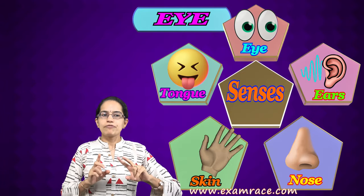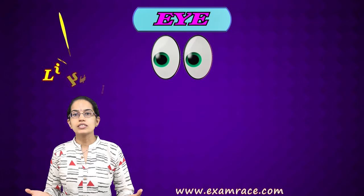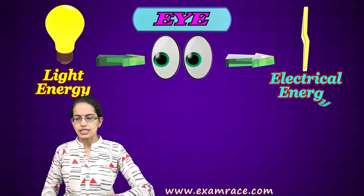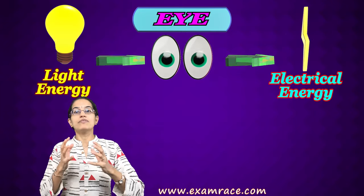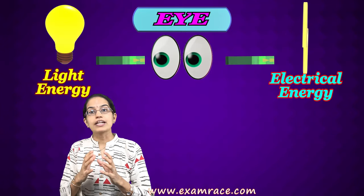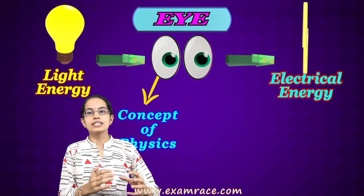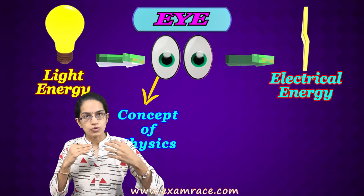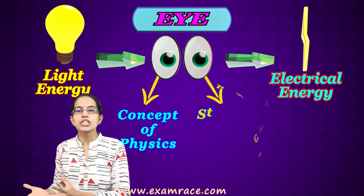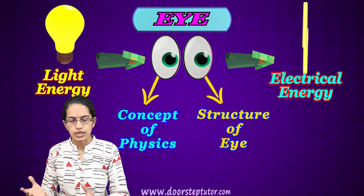If we talk about the eye, what it actually does is it converts light energy into electrical energy. The whole process can be divided into two sections: one is the concept of physics where we understand the concept and properties of light, and the second is the structure of the eye and how it is similar to a pinhole camera.